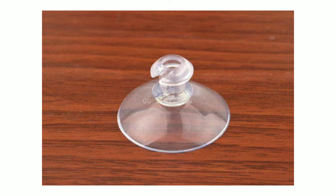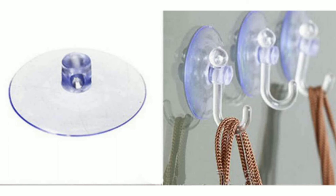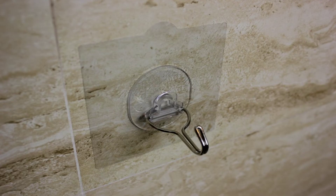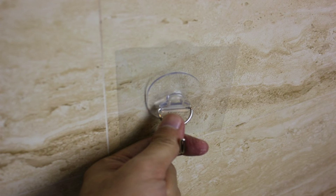Consider a rubber sucker — when you press it hard on a smooth surface, it sticks to the surface. Now try to pull it off; it is not that easy. This is because most of the air between the sucker and the smooth surface escapes out, and the pressure of the atmosphere acts on it. In order to pull the sucker off the surface, the applied force must be large enough to overcome the atmospheric pressure.